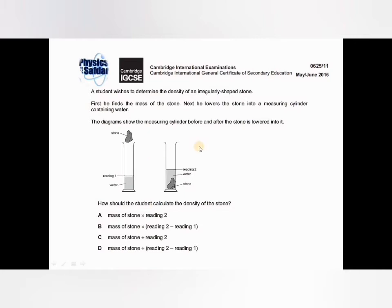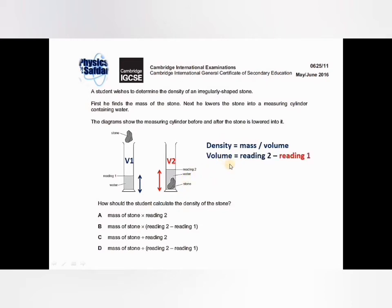We need the mass of the object and its volume. First, read the volume of water without the stone — call this V1. When the stone is lowered into the measuring cylinder, the water level rises to a new level — call this V2. This new volume is greater than the previous one. The difference between the two water levels is the volume of the stone. So volume equals reading 2 minus reading 1.